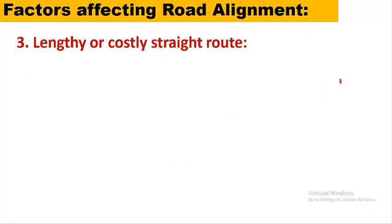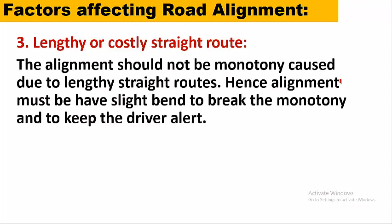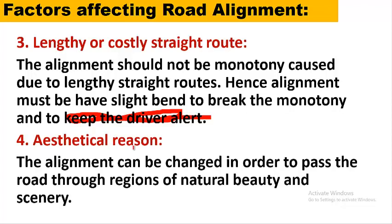A third factor is lengthy or costly straight routes — the alignment should not cause monotony from lengthy straight roads. Hence, the alignment must have slight bends to break monotony and keep the driver alert. Sometimes speed breakers are used on straight roads for the same purpose. Roads can also be deviated for aesthetical reasons — to pass through regions of natural beauty and scenery so tourists can enjoy the ride.